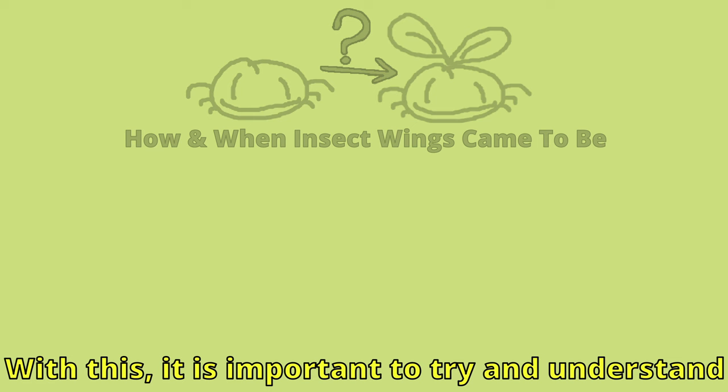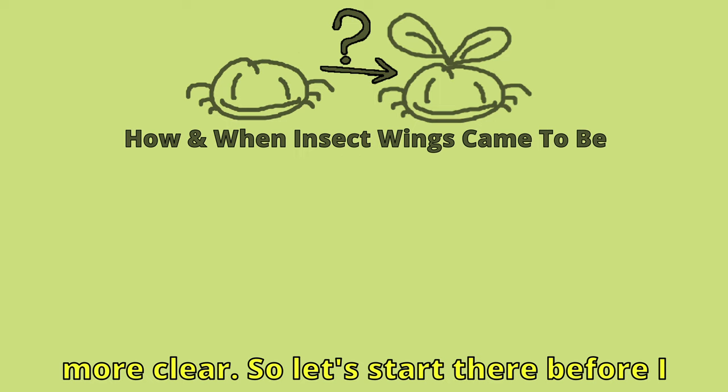insect wings are arguably the single most important driving force in their extreme diversification. This is due to wings opening up the possibility for insects to hold who knows how many niches. With this, it is important to try and understand how and when wings came to be on insects, to make their evolutionary history a little bit more clear. So let's start there, before I get on to explaining their lack of presence in the fossil record and sudden explosion, alongside debunking the oldest known flying insect.